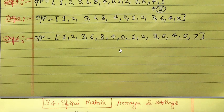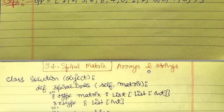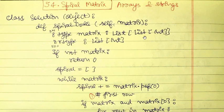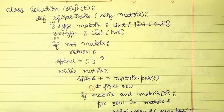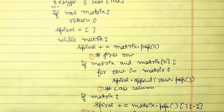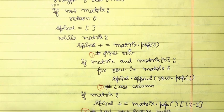Now let's implement this in Python. We have a solution class with a `spiralOrder` function that takes a list of list of integers as input and returns a list. If the matrix is empty, we return an empty list. We initialize `spiral` as an empty list. Then `while matrix` — while the matrix has elements — we do `spiral += matrix.pop(0)` to pop the first row.